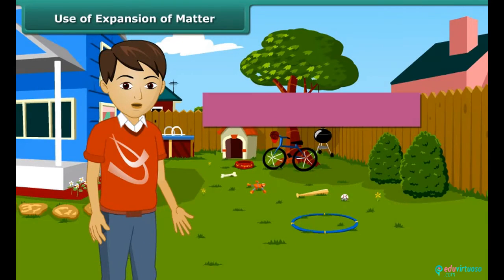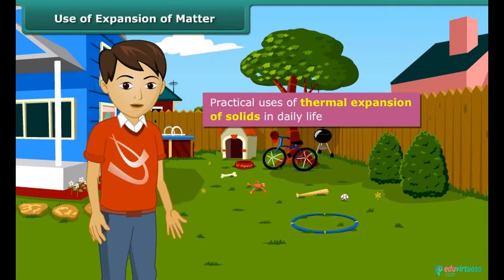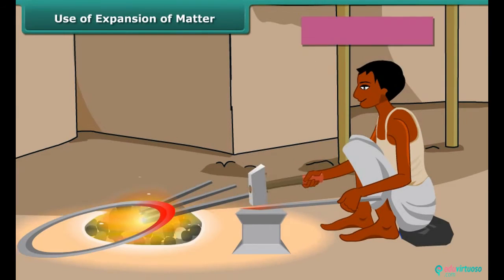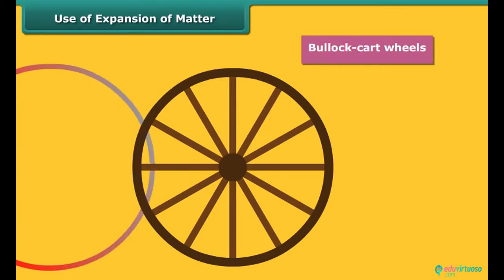Let us look at some practical uses of thermal expansion of solids in daily life. The iron rim is fitted in bullock cart wooden wheels by heating. When the metal cools, it holds the segments of the wooden wheel firmly.